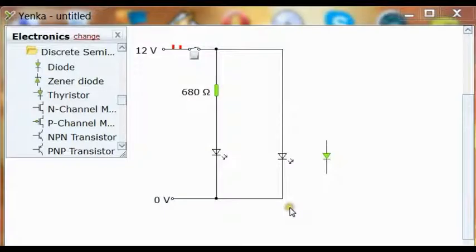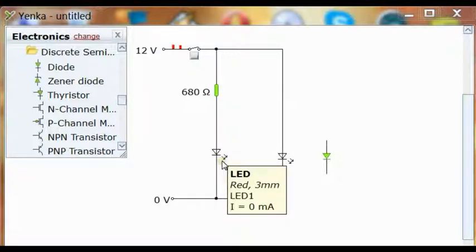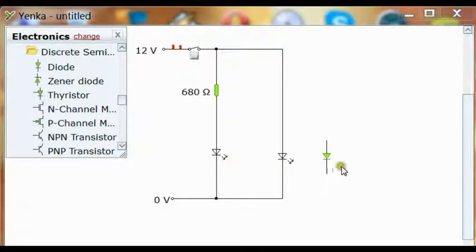I'm using the circuit diagram simulator Yenker, which is available for free if you follow the link in the description below. So this is a standard symbol for an LED you'll see in a circuit diagram. It's very similar to the standard diode symbol, however it has arrows which indicate light has been created.